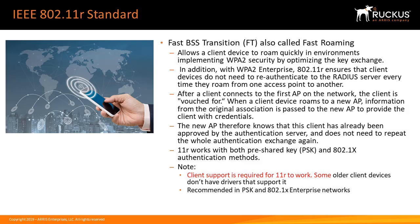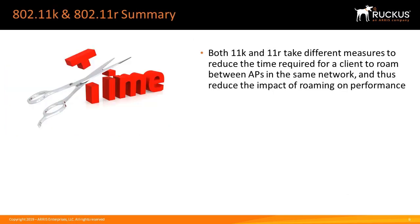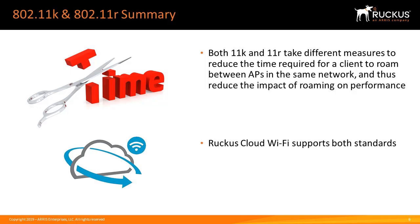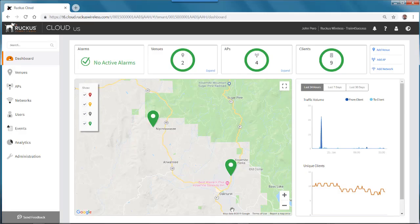It is recommended in PSK and 802.1x enterprise networks. Both 11k and 11r take different measures to reduce the time required for a client to roam between APs in the same network, and thus reduce the impact of roaming on performance. Ruckus Cloud Wi-Fi supports both standards. So let's demonstrate how this is set up.